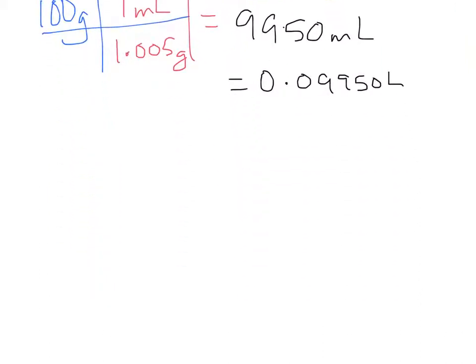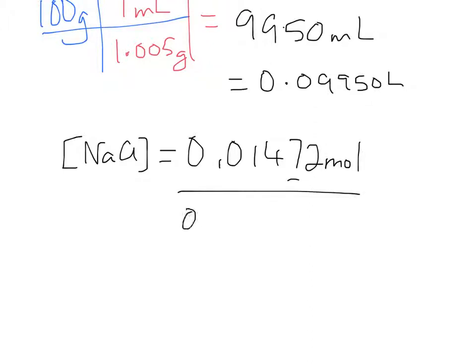So let's go ahead and do that. The concentration of sodium chloride is the number of moles of sodium chloride, 0.01472. The volume, 0.09950 liters. And if we divide that, we get the molar concentration at 0.1479. And that's moles per liter.